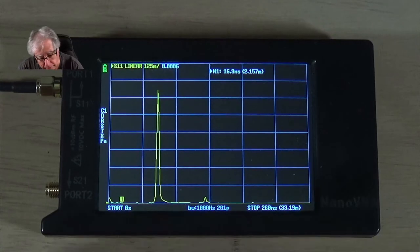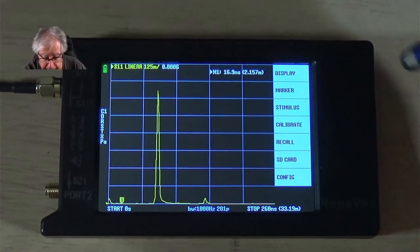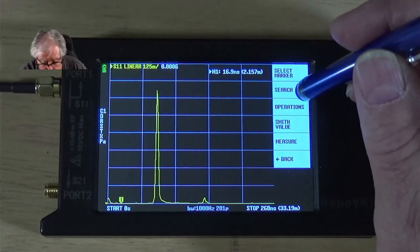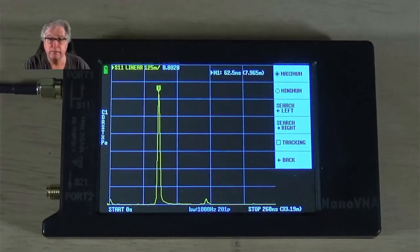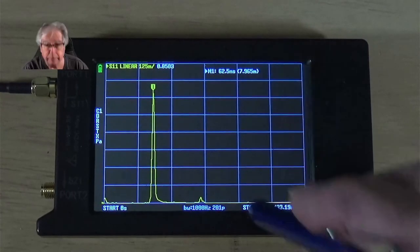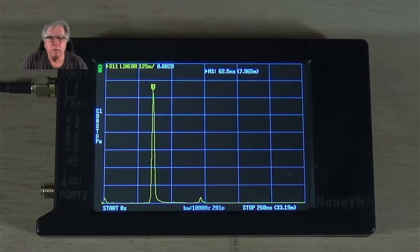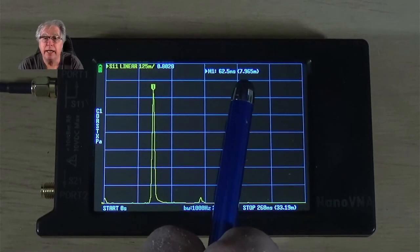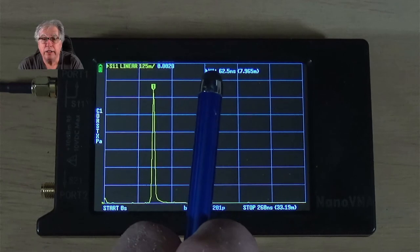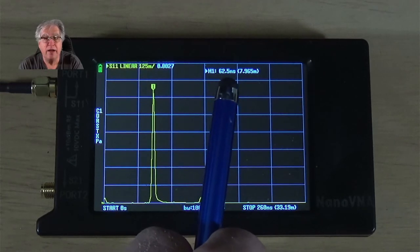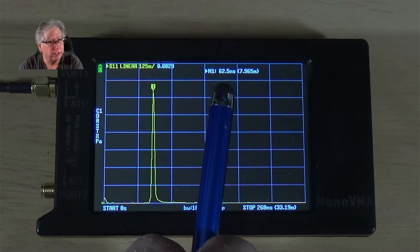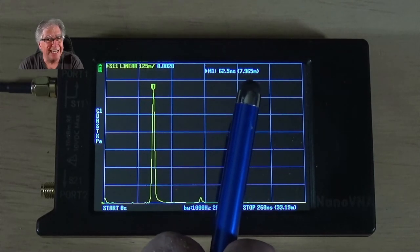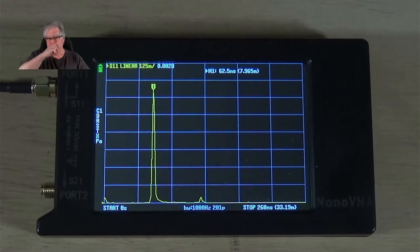So, I am going to jump to that, and I can do that by selecting marker, search, and just click on max. And, there I go, right to that. Now, I look at this, and it shows that my distance, okay, it took 62.5 nanoseconds for the reflection to take place. So, my distance is actually 7.965 meters.